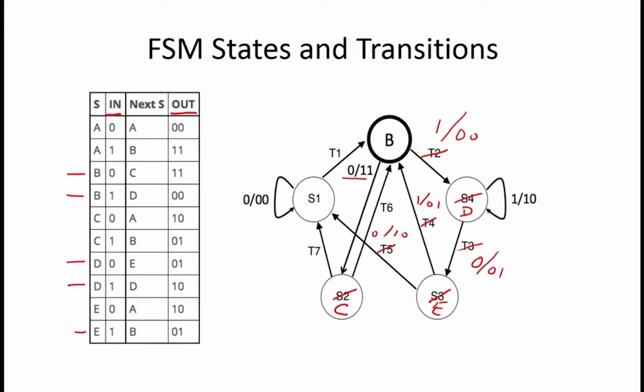From state A, the zero input transition is already filled in, so T1 equals 1 slash 11. From state C, a one input goes to state B, so T6 equals 1 slash 01, which in turn means that T7 equals 0 slash 10.